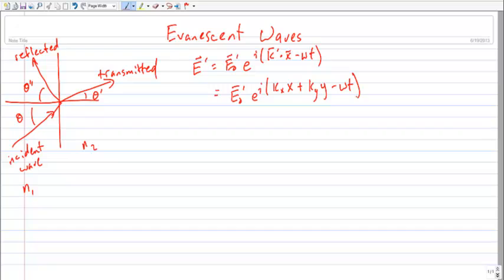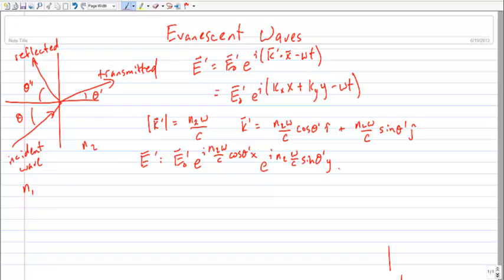As before, I'm going to suppress z. We'll just look at x and y and that'll contain all the pertinent information. As you may recall, the k vector for the transmitted region is of magnitude n2 omega over c, which lets us write the i-hat and j-hat components of the k vector as such. And so we can continue to manipulate our expression for the field in the transmitted region.